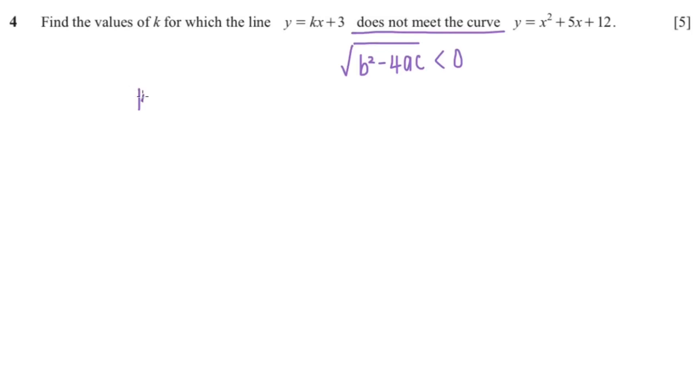So I'm going to equate these two equations: kx plus 3 equals x squared plus 5x plus 12. Now I'm going to bring everything to one side,